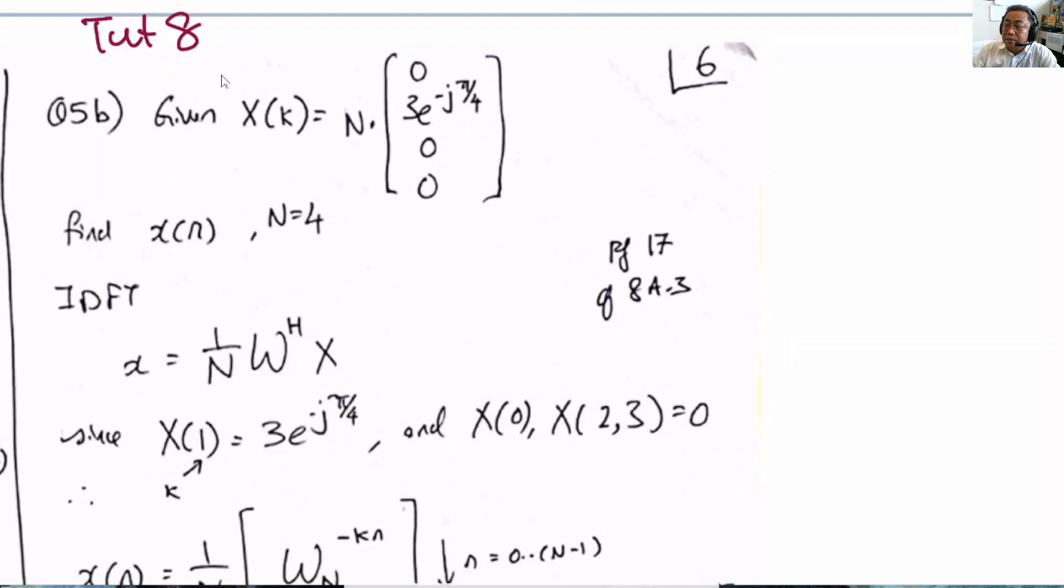Let's start. This is tutorial 8, question 5b. We are now given the DFT coefficients capital X. It is a constant N multiplying these vectors, most of them full of zeros except the elements capital X one, capital X zero, and up to capital X three. Our task is to find the small x.